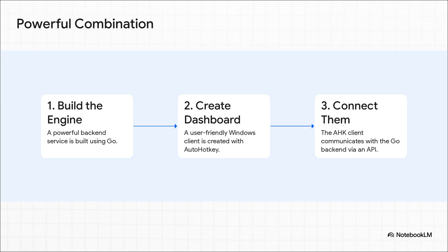A super-fast, super-reliable back-end service that does all the heavy lifting. Then you use AutoHotKey — the Swiss army knife — to build a simple, friendly little dashboard for Windows, and that dashboard just talks to your Go engine. You get the best of both worlds: world-class performance on the back-end, with rapid, easy, flexible user automation on the front-end.